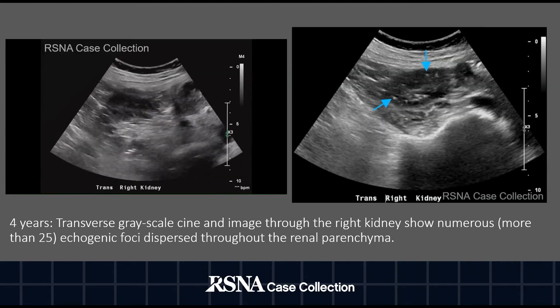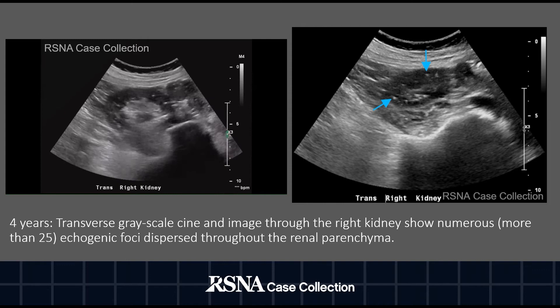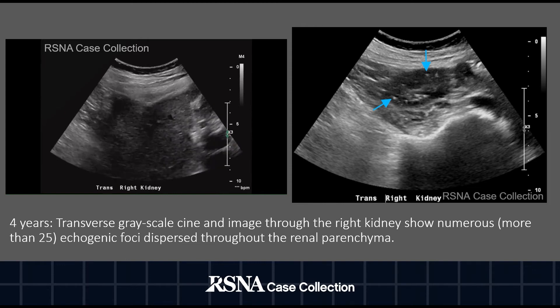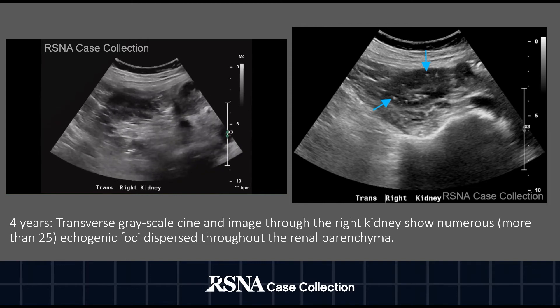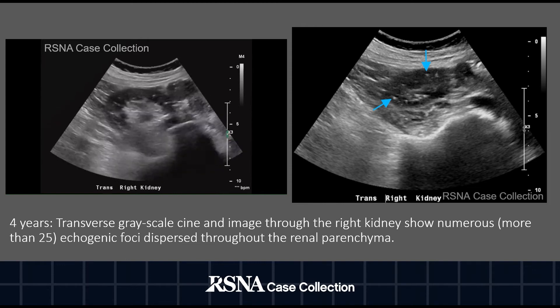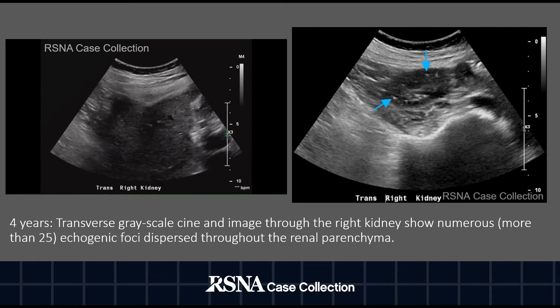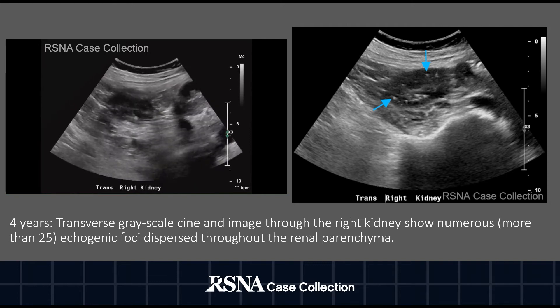This transverse grayscale image through the right kidney shows multiple echogenic foci dispersed throughout the renal parenchyma. The image on the right is also taken from the CT.